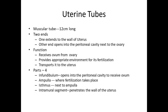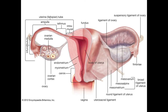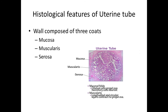The uterine tubes are long paired muscular tubes. They have four parts: infundibulum, ampulla, isthmus, and intramural segment. Histologically, the wall is composed of mucosa, muscularis, and serosa from inside out.